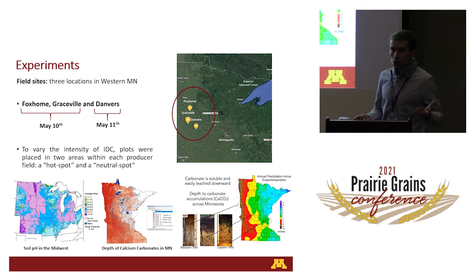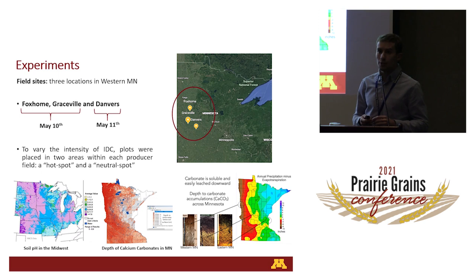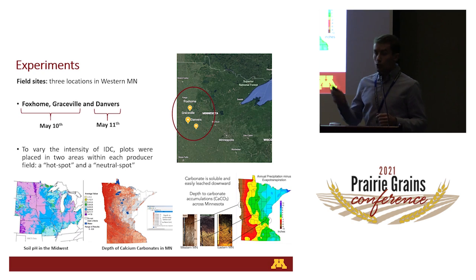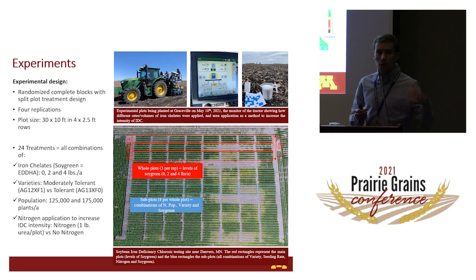To accomplish the goals of our study, we planted our experiment in three different locations in western Minnesota: Oxfam, Graceville, and Degers. Oxfam and Graceville were planted on May 10th and Degers was planted on May 11th. To vary the intensity of IDC, plots were placed in two areas within each producer field — a hotspot area and a neutral spot area.